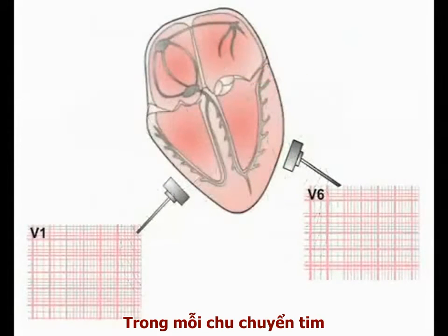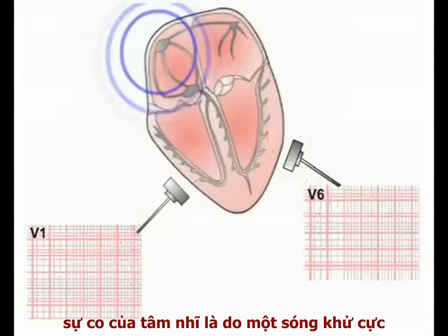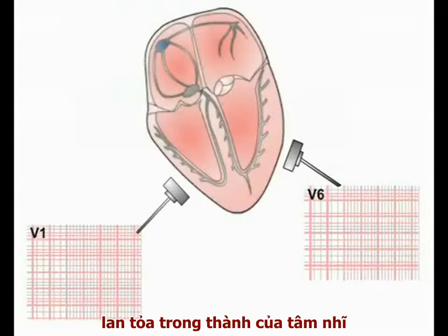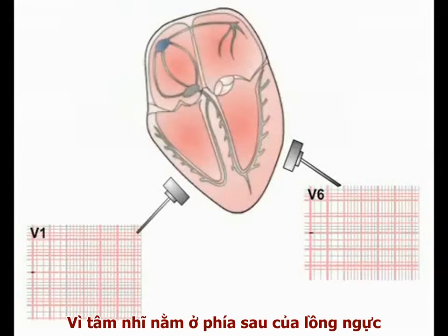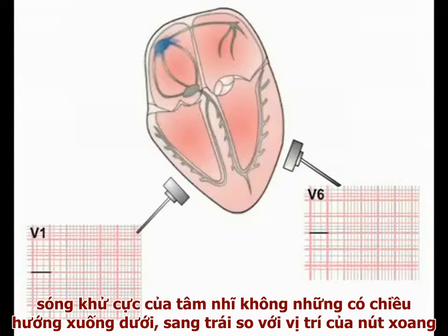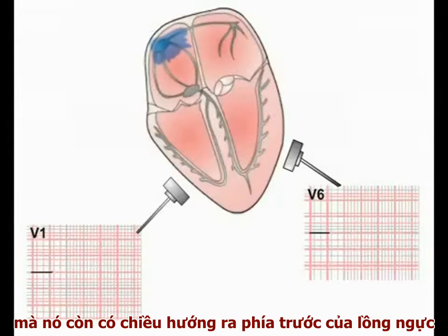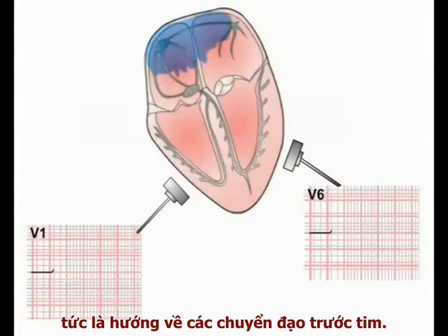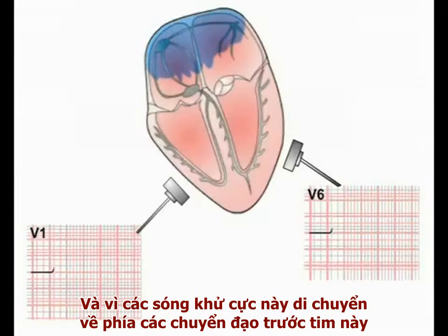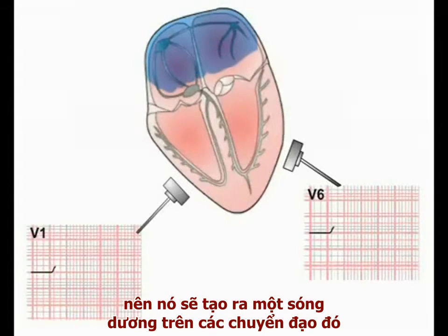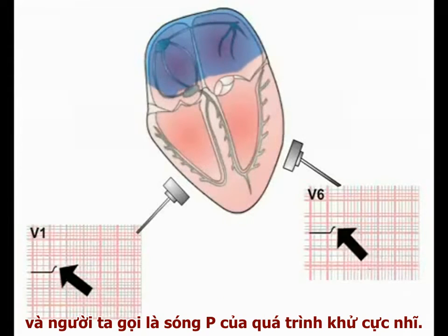During each cardiac cycle, atrial contraction is associated with a wave of depolarisation spreading over the chambers. As the atria sit at the back of the chest cavity, this wave of depolarisation is not only spreading downwards and towards the left from the SA node, but also outwards toward the front of the chest and therefore towards the chest leads. As this depolarising current is moving towards the leads, it produces a positive deflection on the ECG paper. This is the P wave of atrial depolarisation.